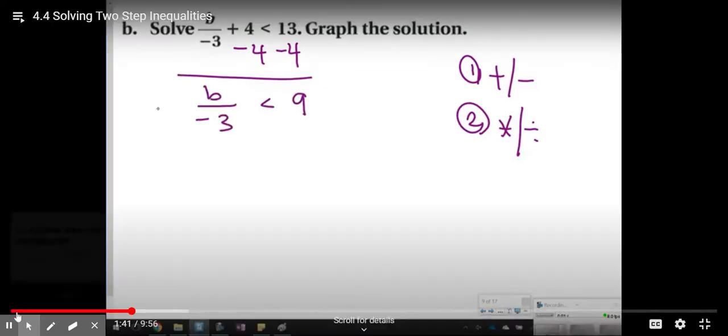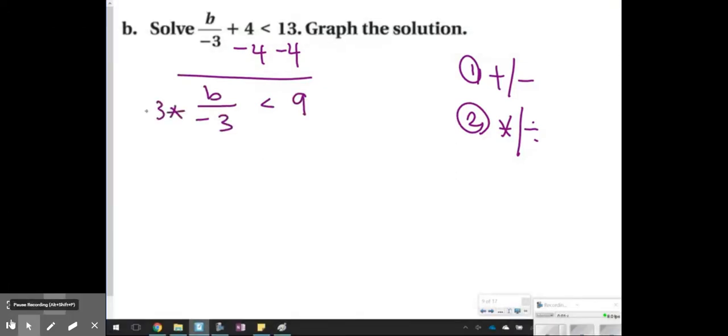I see division, so now I'm going to use multiplication to solve. Remember, when you're multiplying or dividing by a negative number, you need to flip the sign. So less than becomes greater than, and these 3s will cancel out. The b is greater than negative 27.